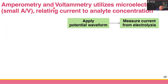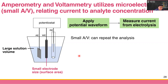These two techniques, amperometry and voltammetry, are something we call small A per V technique. A is area, V is volume. If we consider the electrochemical cell, in amperometry and voltammetry, we use the small electrode size — millimeter or centimeter scale — compared to the large solution volume.